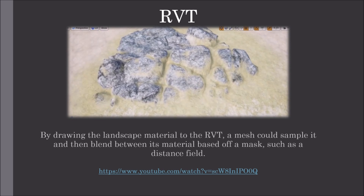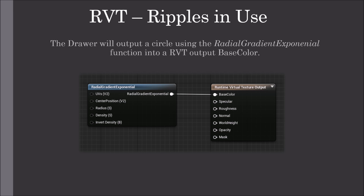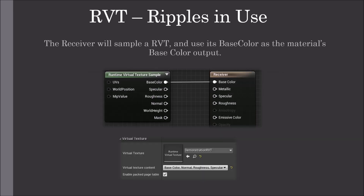By drawing the landscape material to the Runtime Virtual Texture, a mesh could sample it and then blend between its material based off a mask, such as a distance field. For this demonstration of making a simple ripple appear on a material, I will use a drawer and a receiver material. The drawer material will output a circle using the radial gradient exponential function, going into the Runtime Virtual Texture output base color. The receiver will sample a Runtime Virtual Texture and use its base color as the material's base color output.